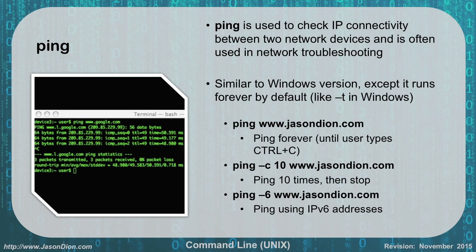Ping works just like it did in Windows with one exception. On Unix, when you use ping to check IP connectivity between two network devices, it will run forever — similar to using the -t command in Windows. It doesn't default to four packets the way Windows does. In Windows, we used -n for the number of pings; in Unix, we use -c for count. So 'ping -c 10 www.jasondion.com' will ping 10 times and stop.